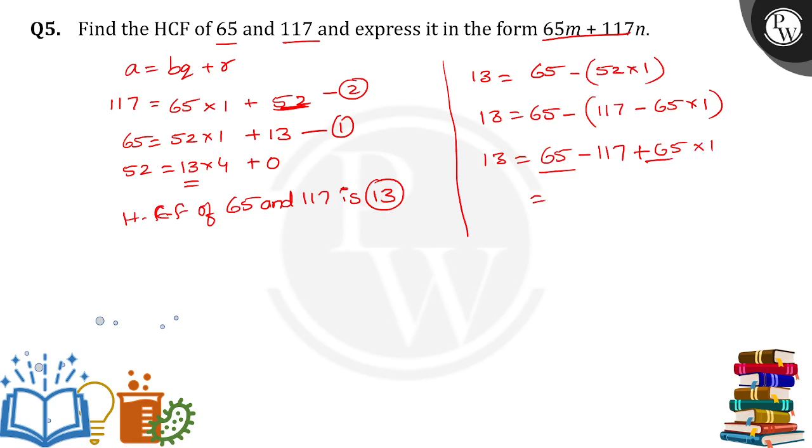So now 13 is equal to 65 minus 117 plus 65 into 1. If I take 65 as common from this, we can get 65 into 2 plus 117 into negative 1. Therefore M is equal to 2 and N is equal to minus 1. So these are the values of M and N.